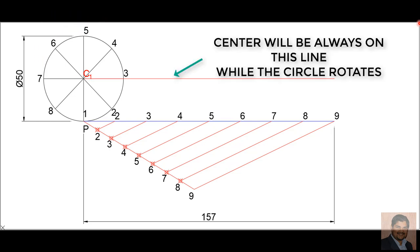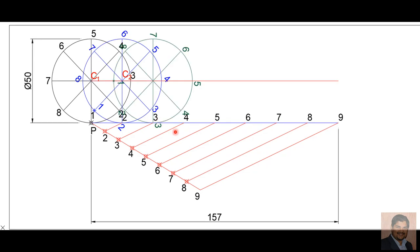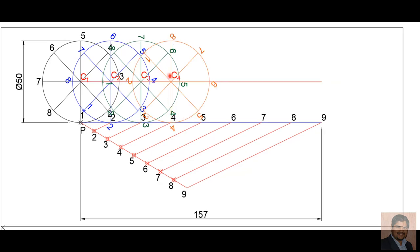While the circle moves in a clockwise direction, the center will move along this red line. When point 2 on the circle matches point 2 on the path, point 1 will move to the corresponding position — similar to point 8 — and the center will move to C2. When point 3 connects with point 3, point 1 will move towards that position and the center will be at C3.